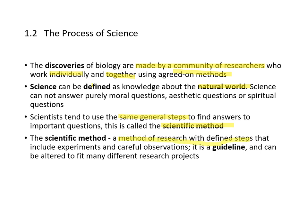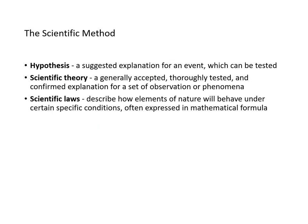The scientific method is a method of research with defined steps that include experiments and careful observations — it's a guideline that can be altered to fit many different research projects. It involves hypothesis, scientific theory, and scientific laws. A hypothesis is a suggested explanation for an event that can be tested. A scientific theory is a thoroughly tested and confirmed explanation for a set of observations. Scientific laws describe how elements of nature behave under specific circumstances and are often expressed in mathematical formulas.